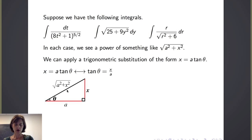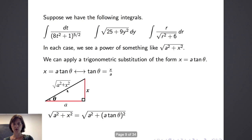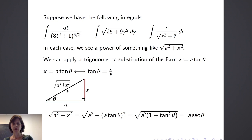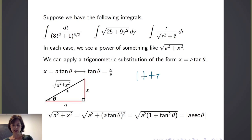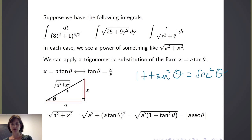Returning to the quantity the square root of a squared plus x squared and applying our substitution, we see that it equals the square root of a squared plus a times the tangent of theta, all squared. We get an a squared in each term under the radical, which we factor out to get the square root of a squared times the quantity one plus tangent squared theta. Since one plus tangent squared theta equals secant squared theta by the Pythagorean identity, taking the square root gives us the absolute value of a times the secant of theta.